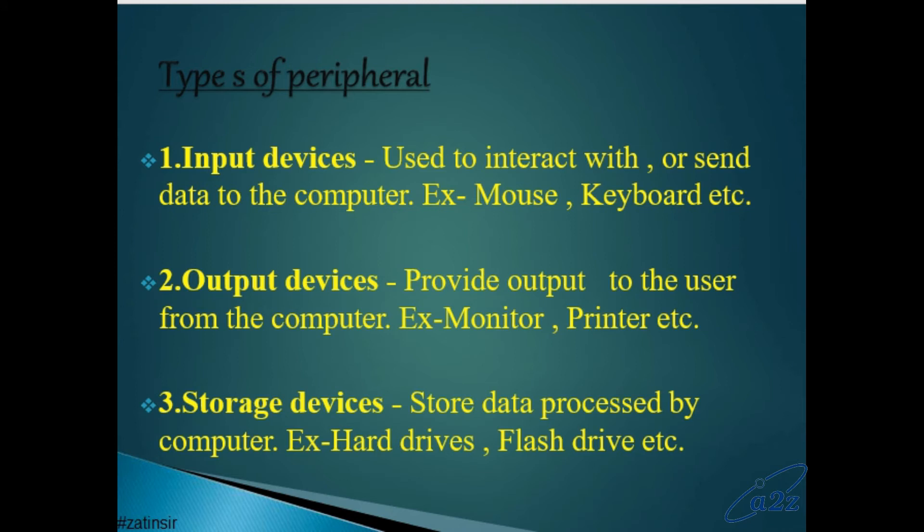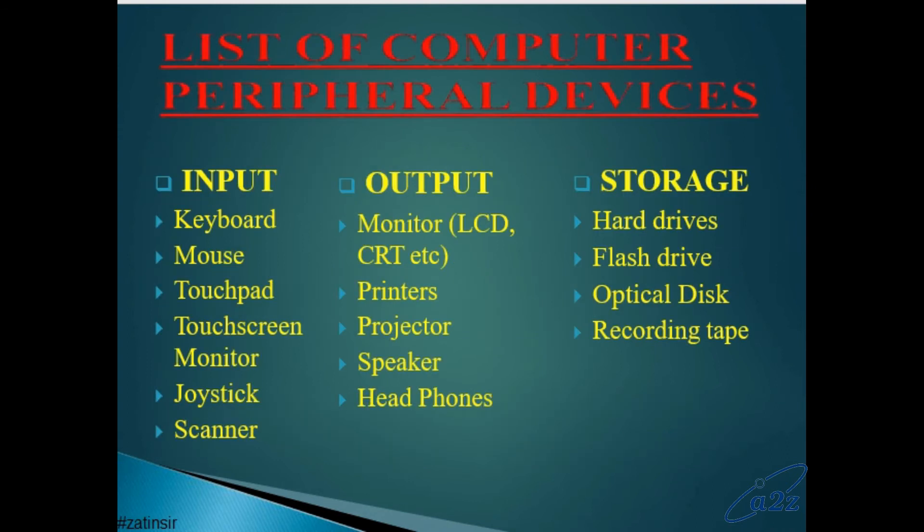Types of peripheral devices: Input devices, output devices, storage devices. Input devices means mouse, keyboard. Output devices means monitor, printer. Storage devices: hard drive, flash drive, pen drive, solid state drive, DVD, CD. These are the list: keyboard, mouse, touchpad, touchscreen, monitor, joystick, scanner. Output: monitor, LCD, CRT, printer, projector, speaker, headphones. Storage: hard drive, flash drive, optical disc drive, recording tape, etc.